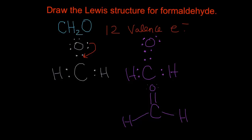We can double-check all the formal charges. Oxygen has 6 valence electrons: 6 minus 6 (counting half the bonding electrons and lone pairs) equals zero, so oxygen has a formal charge of zero. Carbon has 4 valence electrons: 4 minus 4 equals zero, so carbon has a formal charge of zero. Each hydrogen is 1 minus 1, also zero. This is a good Lewis dot structure because everything fulfills the octet rule and all formal charges are zero — a happy Lewis dot structure.